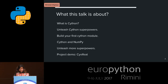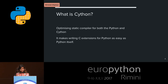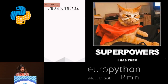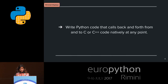So what is Cython? It's actually a static compiler for both the Python programming language and the extended Cython programming language. It makes writing C extensions for Python as easy as Python itself. The first superpower: when you use Cython, your Python code can call C and C++ code back and forth natively.